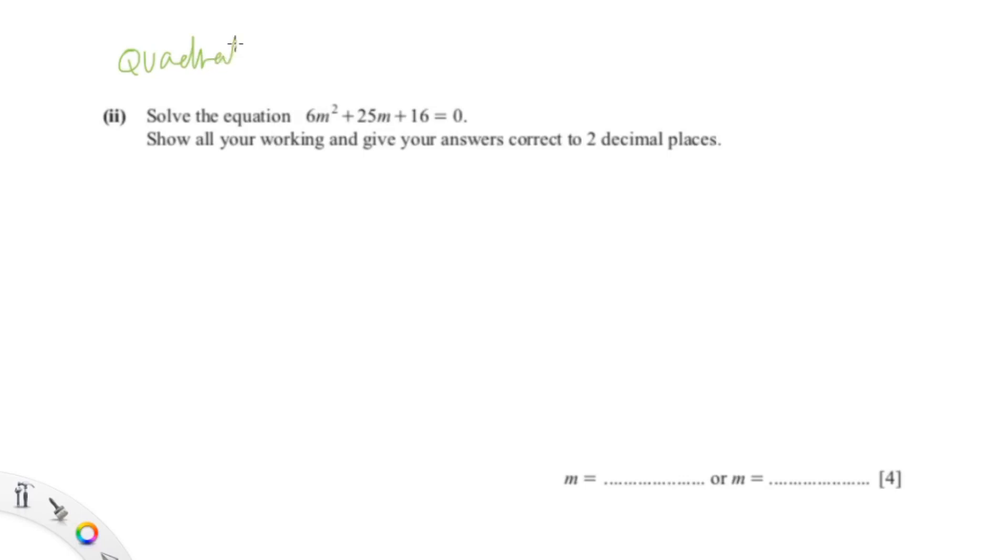For this question, you need to know the quadratic formula, which is [-b±√(b²-4ac)]/2a. So our a, b, c are 6, 25, and 16.